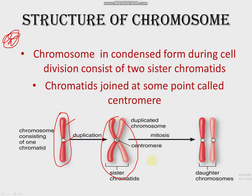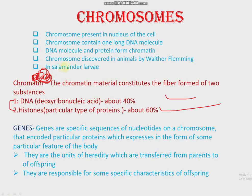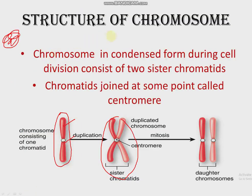Today we learned that in cell division, when the nucleus divides, it contains chromosomes. Because of division in the chromosomes, they are passed to the next generations. We covered what chromosomes are made up of, what chromatin material is, what genes are, and what the structure of chromosome is. For your exam, remember: the structure of chromosome, what chromatids are, what centromere is, and the overall structure of the chromosome.